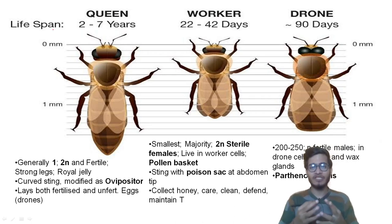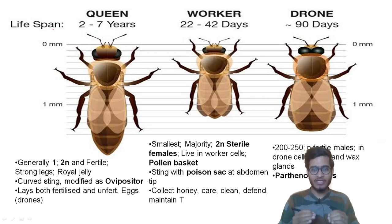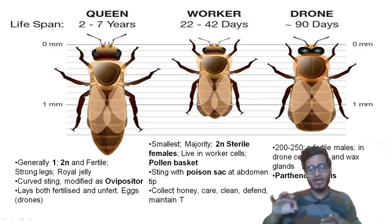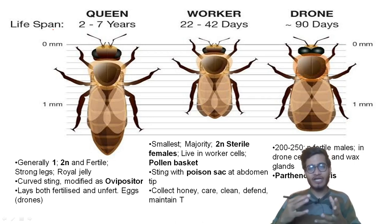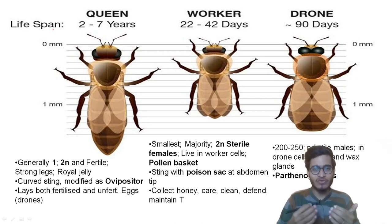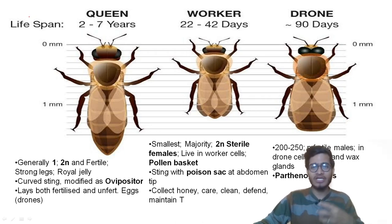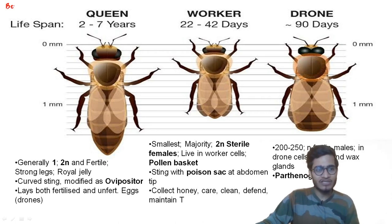We need to identify the difference between all three of them. First of all, there is a clear-cut division of labor in bees. One type of bee will do a different job, another type will do a different job. Some will maintain cleanliness in the beehive, some will maintain the temperature, some will search for food, and some will give rise to new bees.